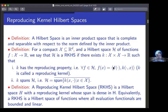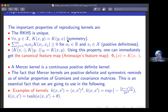An RKHS is a Hilbert space with two extra properties — the reproducing property. Specifically, it is a Hilbert space with a reproducing kernel which satisfies the first property, and this reproducing kernel has a span that is dense in H — the second property. Some properties of the RKHS: the kernel is unique, symmetric, and positive definite. It satisfies the interesting property that K(x,y) can be written as an inner product in H of K(x,·) and K(y,·). We use the canonical feature map phi(x) = K(x,·). Examples of kernels include the monomial kernel, the Gaussian, and the hyperbolic tangent.